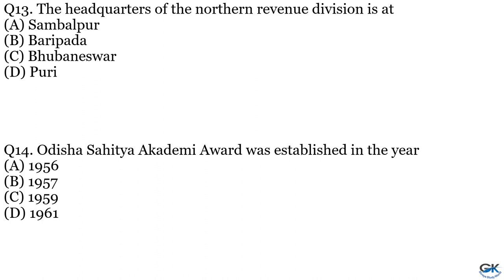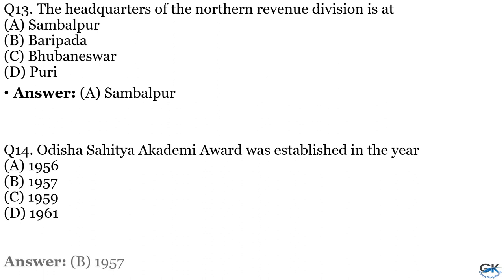Question No. 13: The headquarters of the Northern Revenue Division is at which place? Option A: Sambalpur. Option B: Baripada. Option C: Bhubaneswar. Option D: Puri. The answer is Option A, Sambalpur. Question No. 14: Odisha Sahitya Academy Award was established in the year — Option A: 1956. Option B: 1957. Option C: 1959. Option D: 1961. The answer is Option B, 1957.